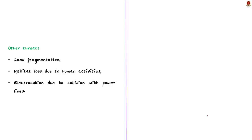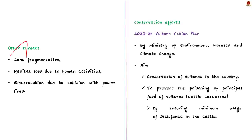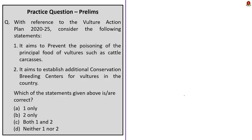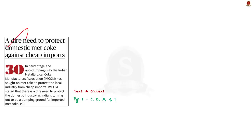In November 2020, the Ministry of Environment, Forestry and Climate Change launched the Vulture Action Plan 2020–25. This action plan envisages conservation of vultures in the country and also strives to prevent the poisoning of the principal food of vultures — cattle carcasses — by ensuring minimum use of diclofenac in cattle. In this discussion we saw vulture species, their types, and the threats they face.